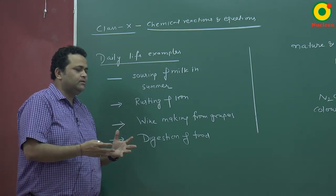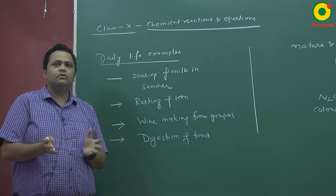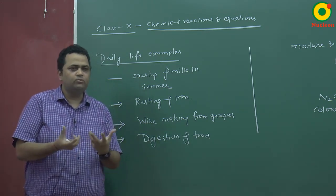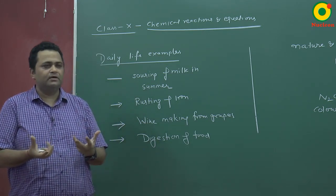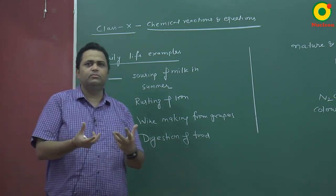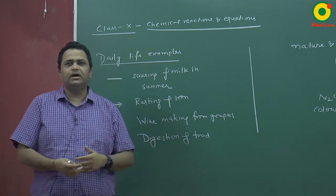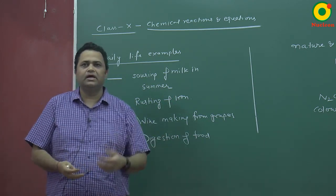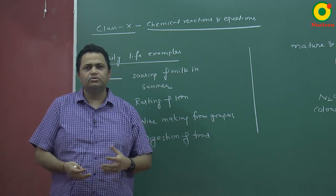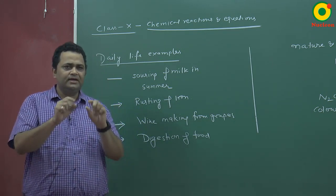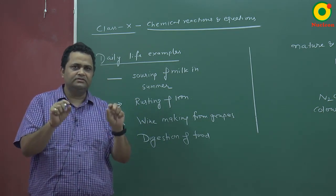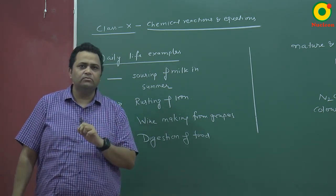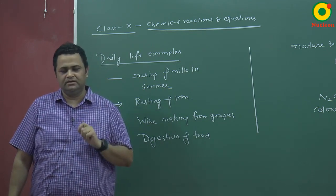In your environment, iron is used. If you leave an iron chair or any iron object out for many days, a red layer forms on it. That red layer is called rusting.